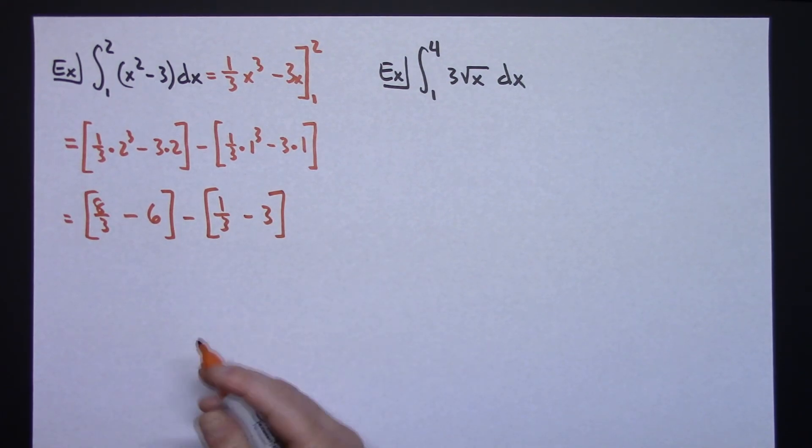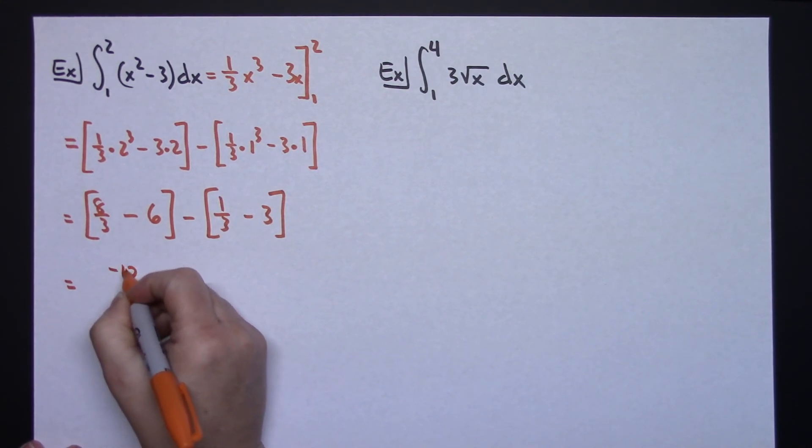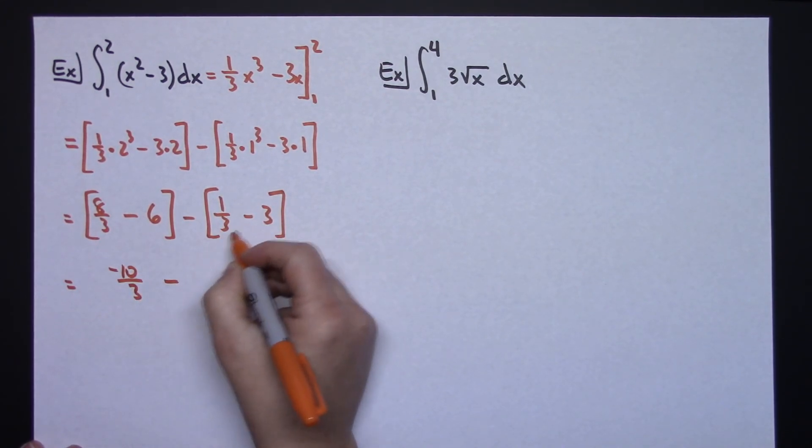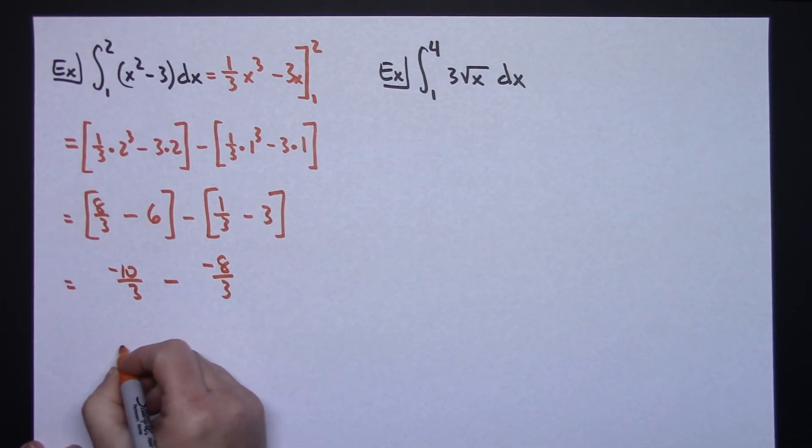Alright, at this point, you either do this by hand, you grab a calculator, alright, or whatever from this first expression, I'm going to get a negative 10 thirds minus, and from here, I'll get a negative 8 thirds. Going ahead and subtracting there for my final definite integral, I'm going to get a negative 2 thirds.